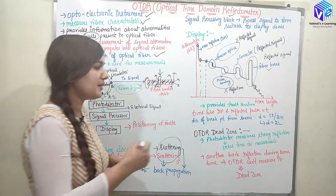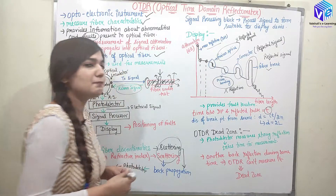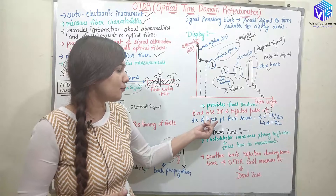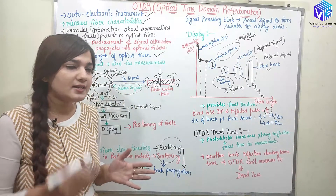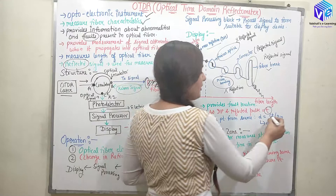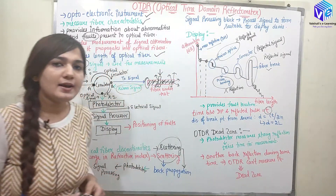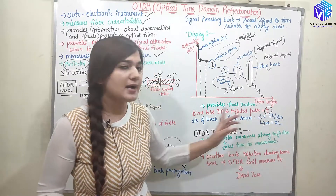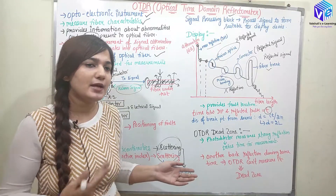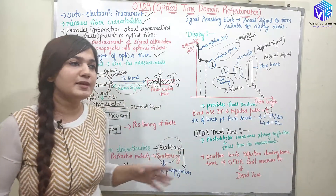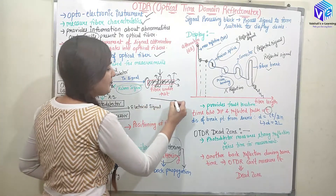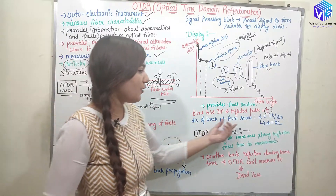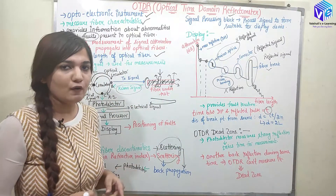We can find the time T between the input and the reflected pulse. The distance D of the break point from the source is calculated as D = (C × T) / (2N), where N is the refractive index of the core, C is the speed of light in vacuum, and T is the measured time. The measured distance is 2L because the signal travels to the fault and back to the circulator.